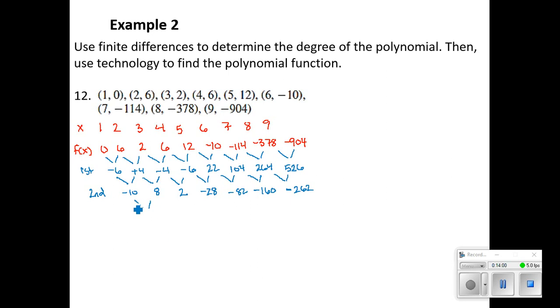Let's try third. -10 minus 8. 8 minus 2. 2 minus -28. -28 minus -82. It's going to be positive 54. -82 minus -160. Positive 78. -160 minus -162. 102. So it wasn't a third difference.